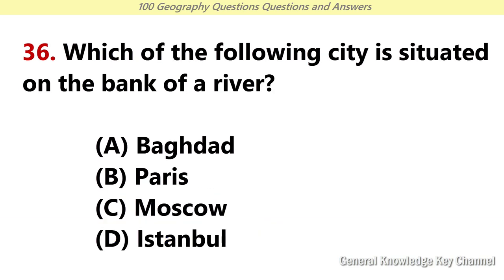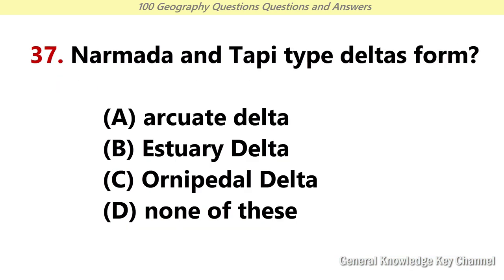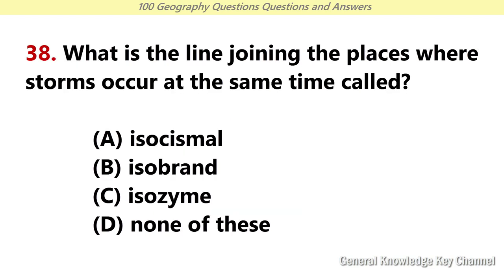Which of the following cities is situated on the bank of a river? Answer D: Istanbul. Narmada and Tapi types delta form? Answer B: Estuary delta. What is the line joining the places where storms occur at the same time called? Answer B: Isogrand.